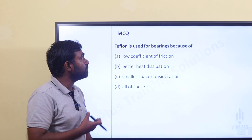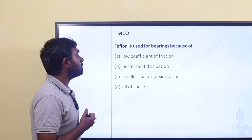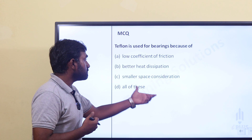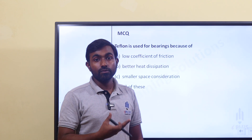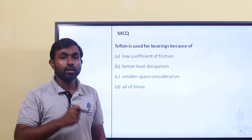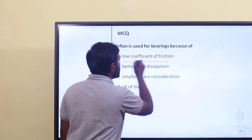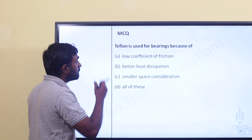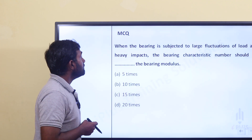Teflon is used for bearings. The reason is its low coefficient of friction, better heat dissipation, and smaller space concentration — all of these. Teflon is a plastic material with a high temperature capacity and a very low coefficient of friction of 0.04.